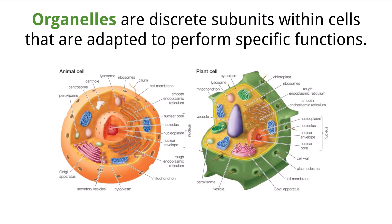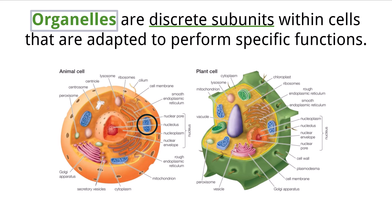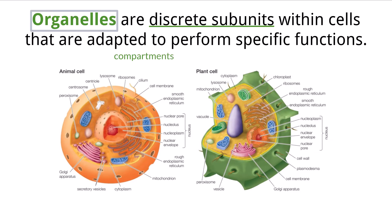When looking at all types of cells, a large part of what makes them function in unique ways are structures called organelles. Organelles are discrete components found within cells that perform specific tasks. These discrete components are often referred to as compartments, and we call cells like eukaryotic cells that have many separate membrane-bound organelles, compartmentalized because of them.